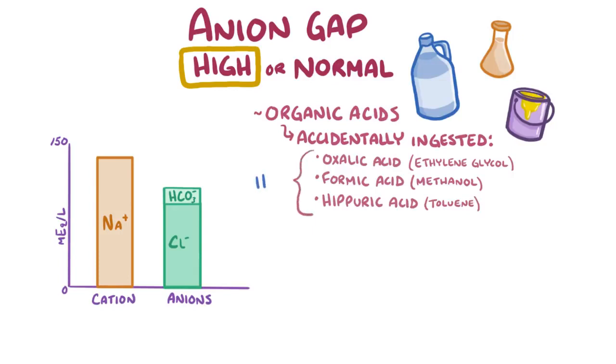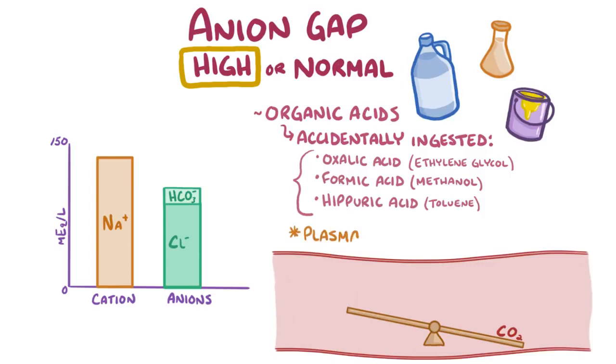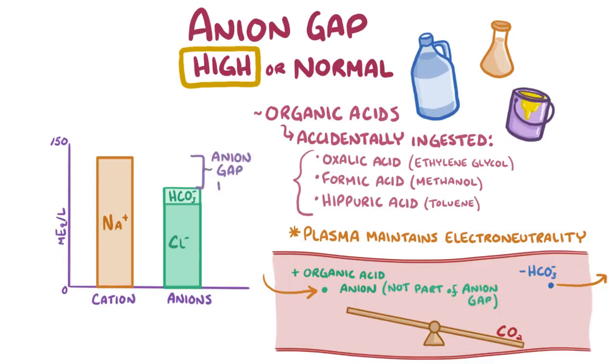All of these organic acids have protons, and at a physiologic pH they dissociate into protons and the corresponding organic acid anions. The released protons attach to bicarbonate ions floating around, which decreases its plasma concentration and shifts the pH towards the acidic range. The key here is that the plasma maintains its electroneutrality, because for each new negatively charged organic acid anion, there's one less bicarbonate ion. Because the organic acid anions are not part of the anion gap equation, the anion gap will be high.